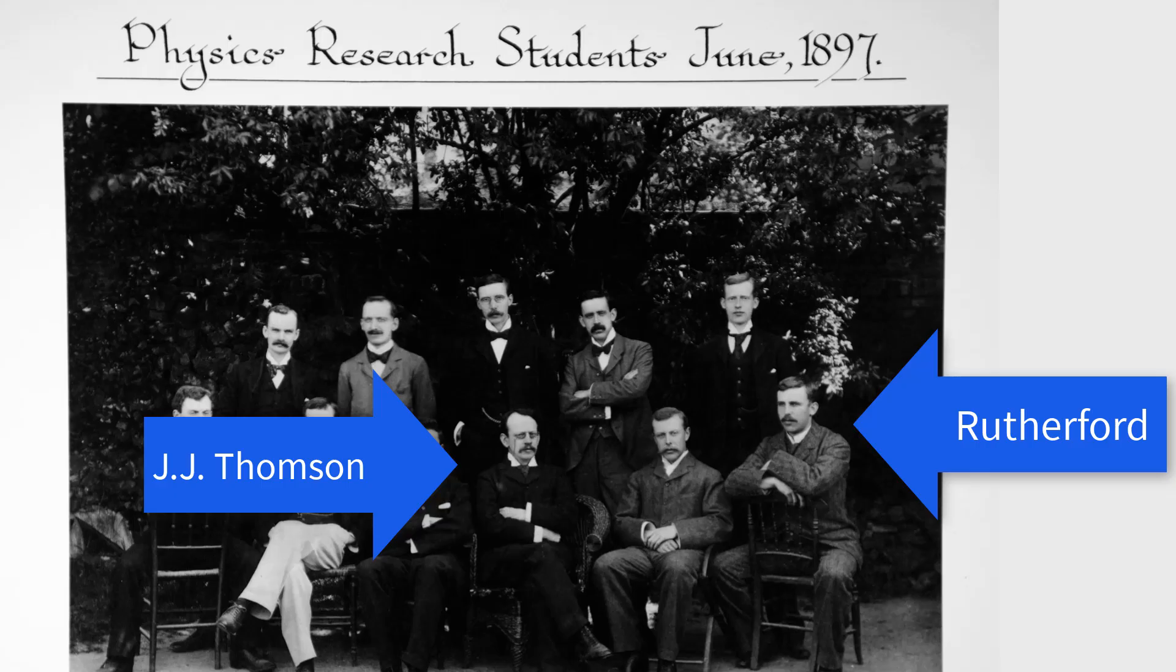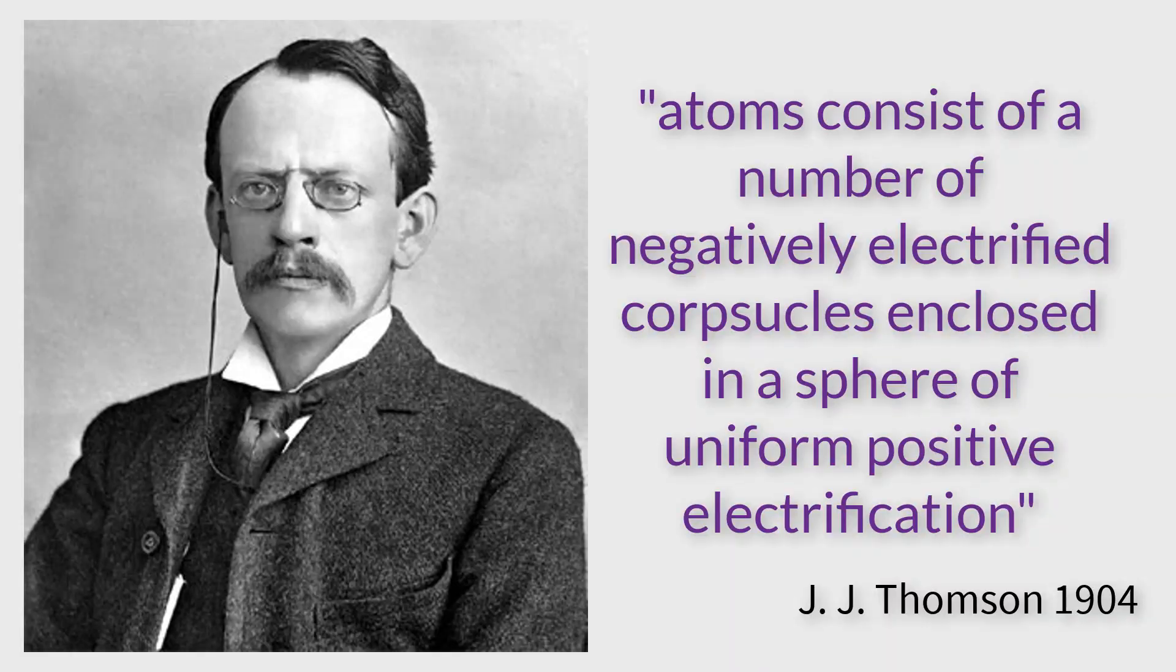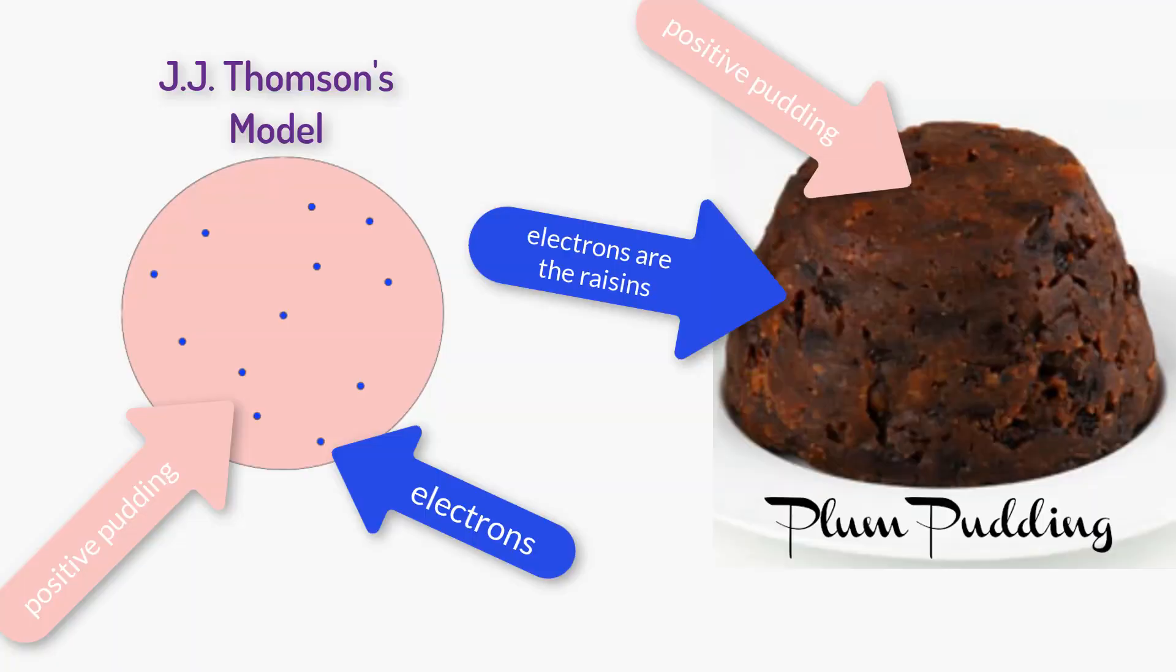J.J. Thompson, Rutherford's advisor at Cambridge, had discovered electrons, which he called corpuscles back in 1897. And by 1904, Thompson had concluded that, quote, atoms consist of a number of negatively electrified corpuscles enclosed in the sphere of uniform positive electrification. This was colloquially called the plum pudding model of atoms, where the electrons were the raisins, or if you're a Brit, the plums in a positive pudding.